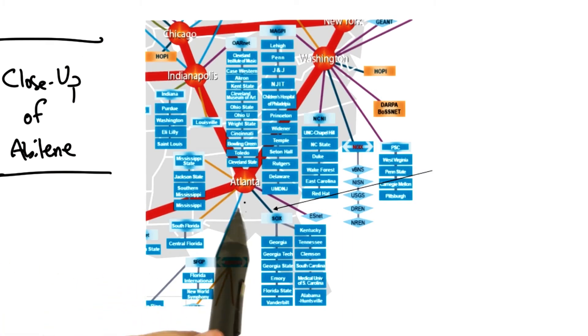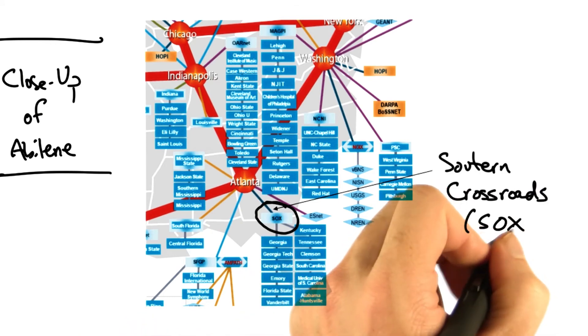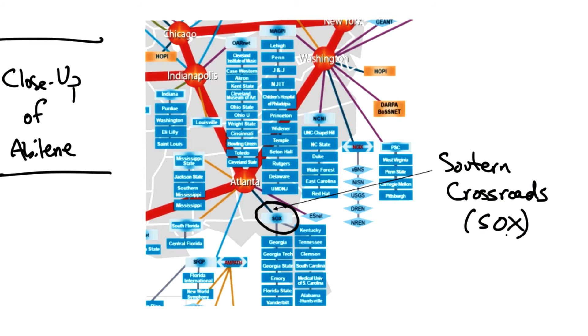Here's a closeup of the Abilene network in the southeastern US. The Abilene network connects to other universities in the southeast near Atlanta at an internet exchange point called SOX, or Southern Crossroads.